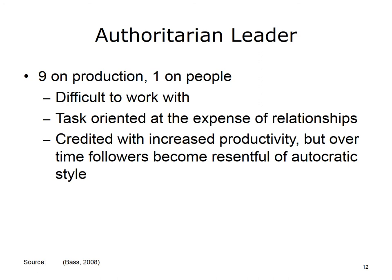Authoritarian leaders are high task and low relationship, represented by a 9 on production and a 1 on people. People who get this rating are very task-oriented and are difficult to work with and hard on their workers, meaning they are an autocratic type. As stated by Bernard Bass in the Handbook of Leadership, the authoritarian approach can contribute to increased productivity levels in the workforce, but over extended periods of use, it has an adverse reaction on individuals because of the autocratic style.